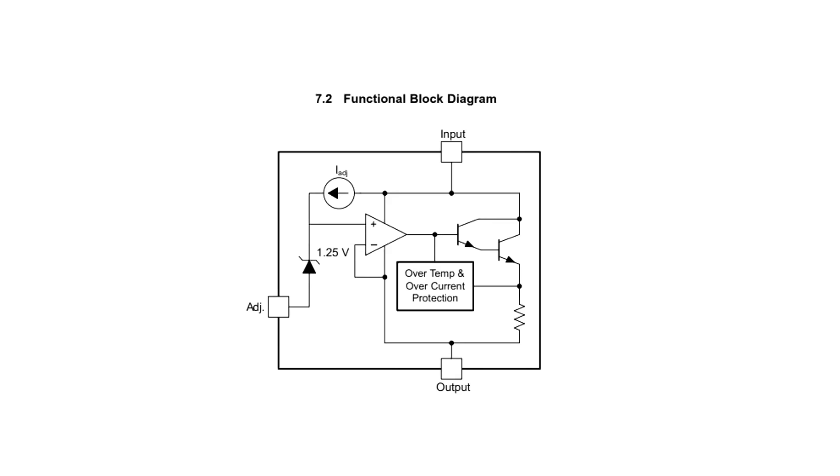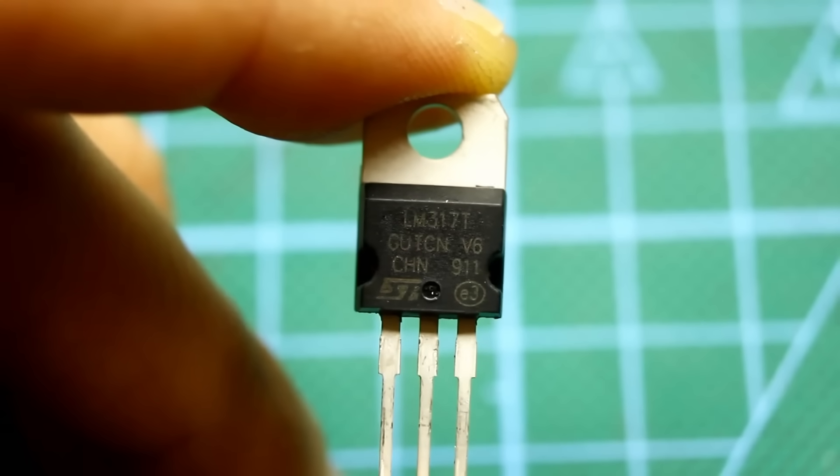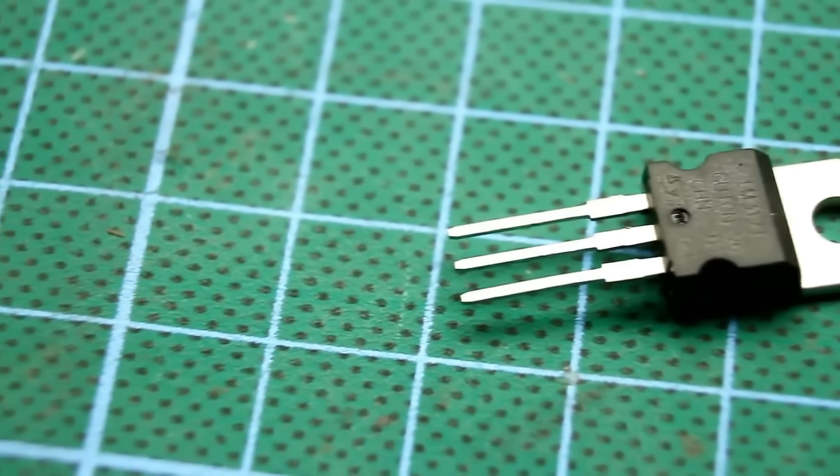For the short-circuit protection system, there is a current sensor inside the chip. The protection system monitors the drop on this sensor. If the drop exceeds the norm, the protection will activate. One and a half amperes is, of course, quite a bit, but what if more current is needed?